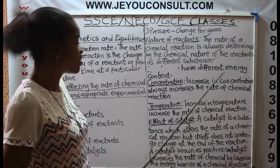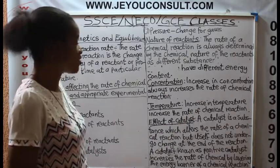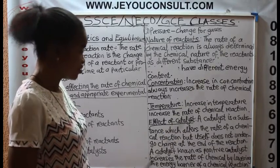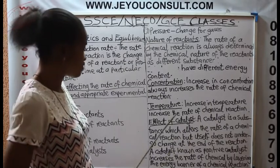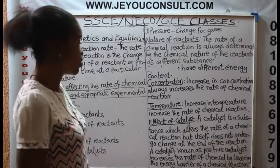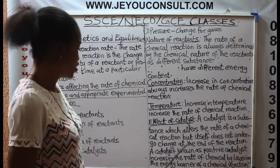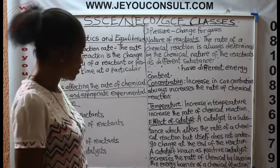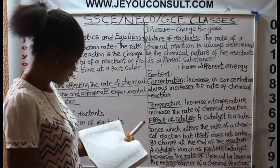The temperature: if the temperature of the reactant increases, the rate of reaction also increases. The effect of catalyst — first of all, we define the meaning of catalyst. A catalyst is a substance which alters the rate of a chemical reaction but itself does not undergo any change at the end of the reaction. A positive catalyst increases the rate of chemical reaction by lowering the energy barrier of the chemical reaction.